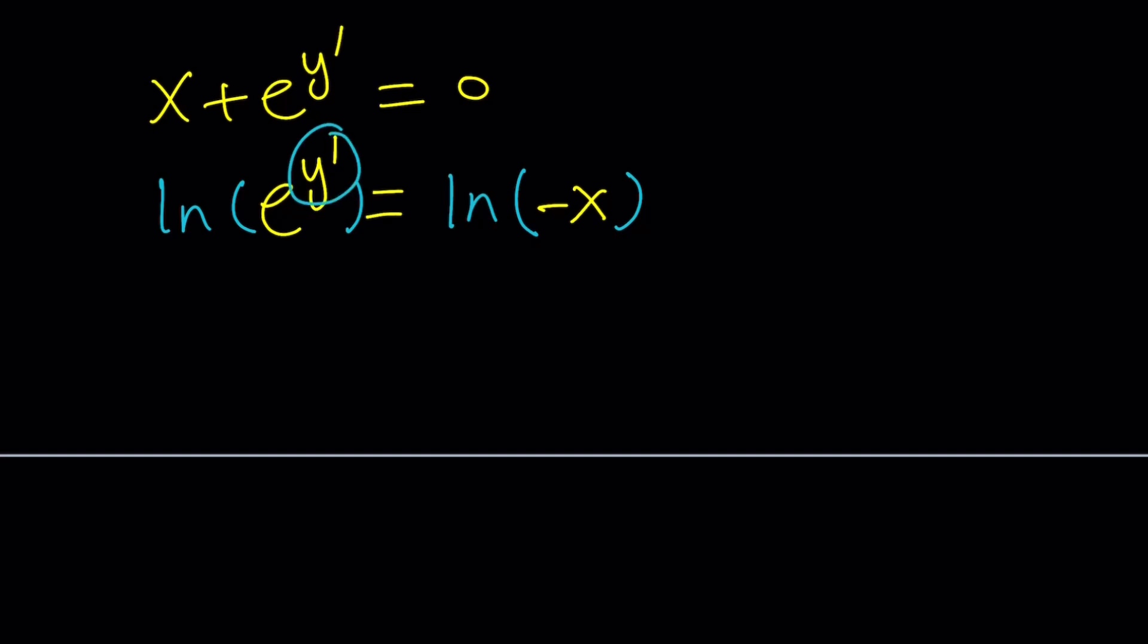So if I ln this and ln that. And you can bring this to the front. So this becomes y prime times ln e. But ln e is equal to 1. Okay? So this becomes y prime equals ln negative x.